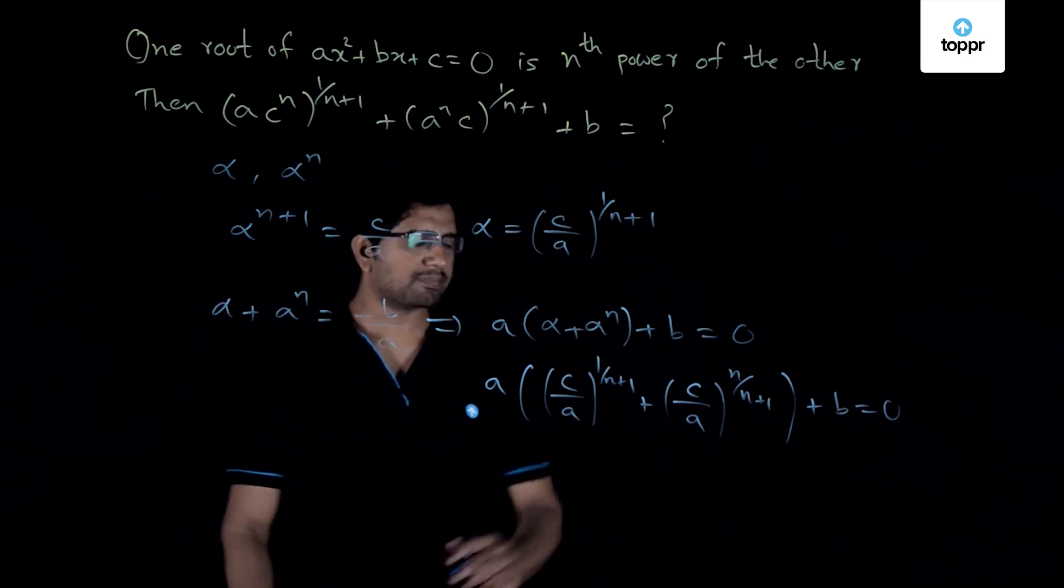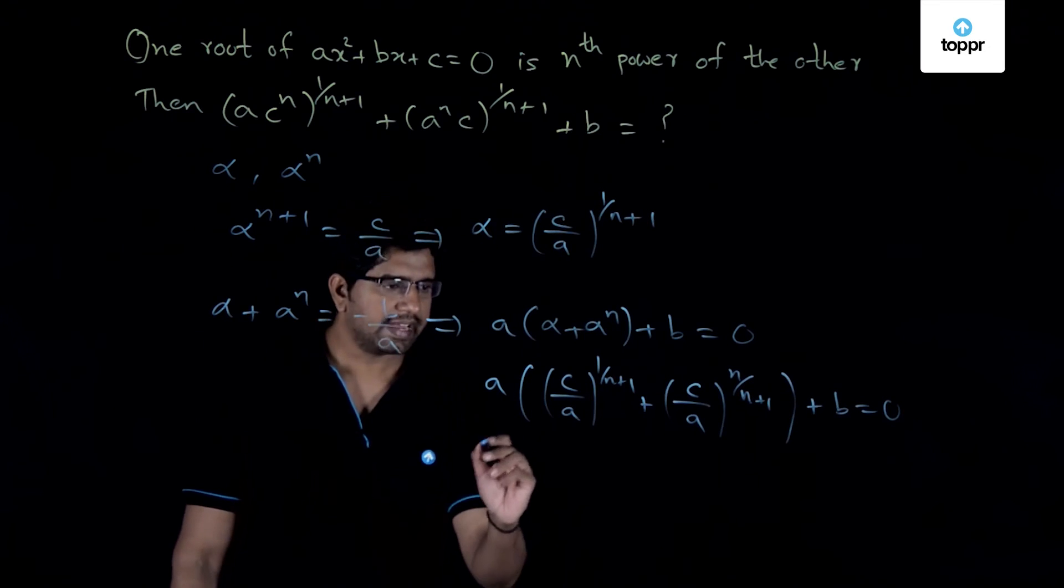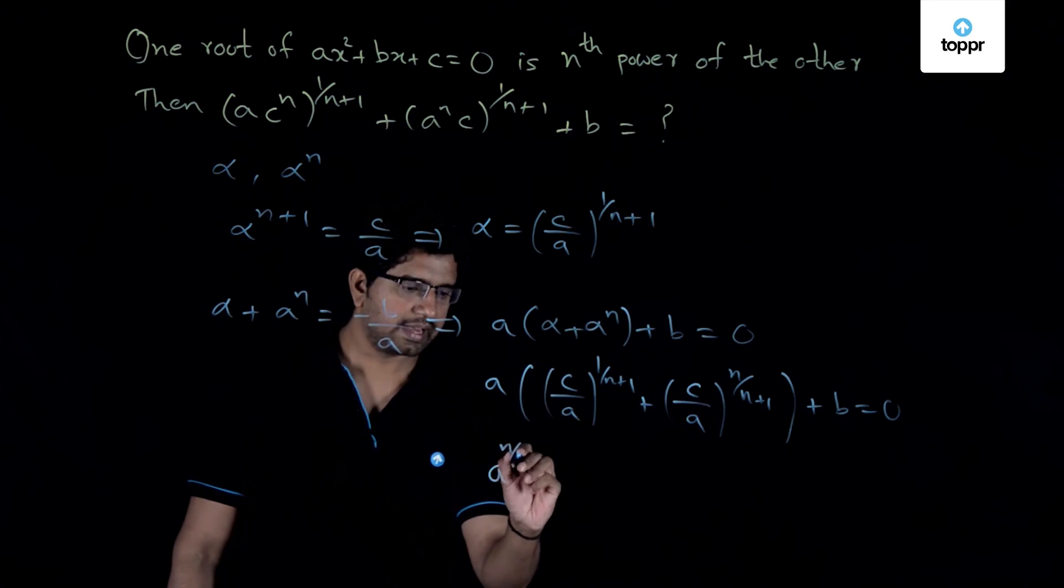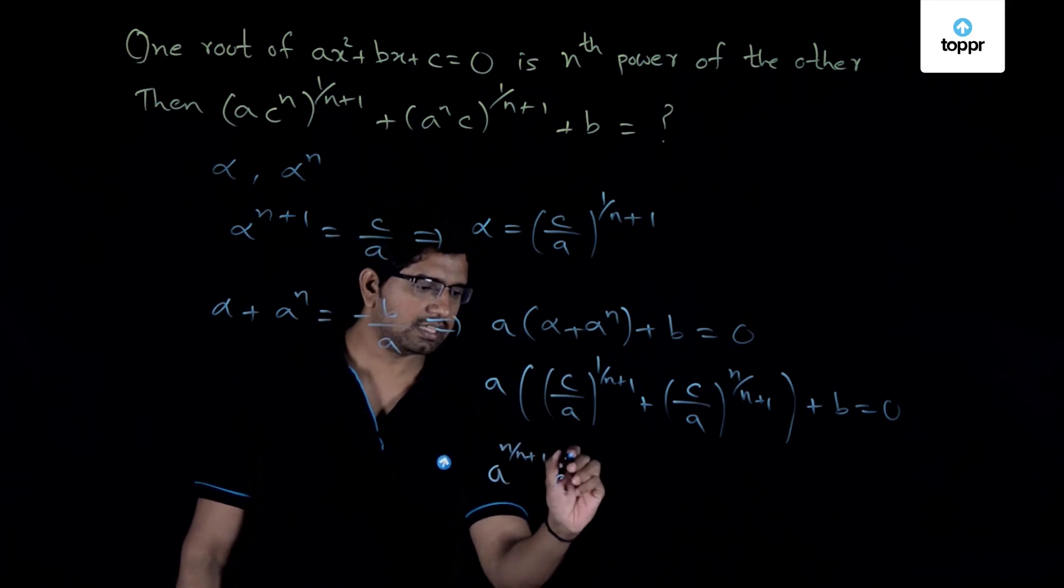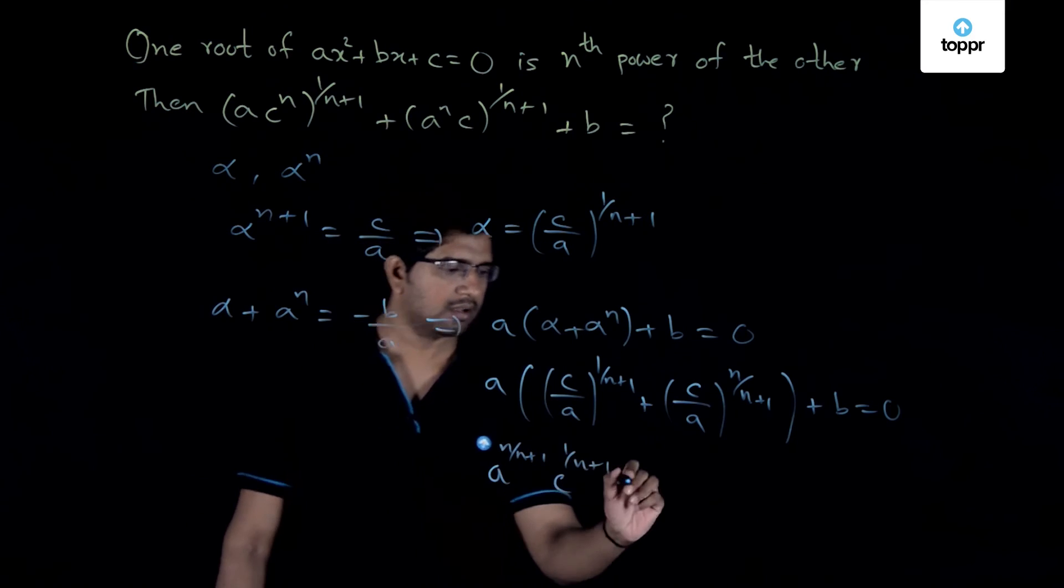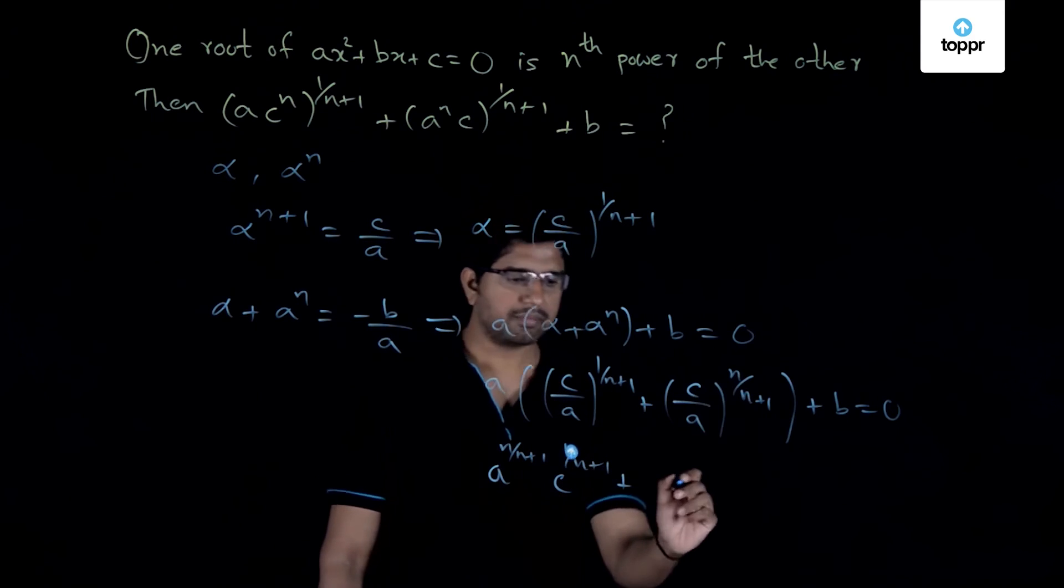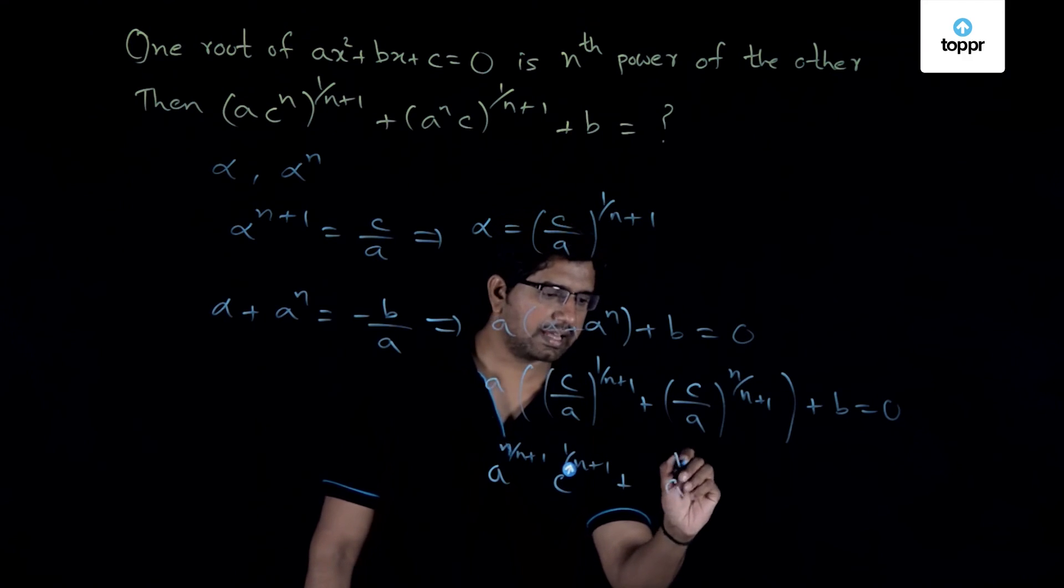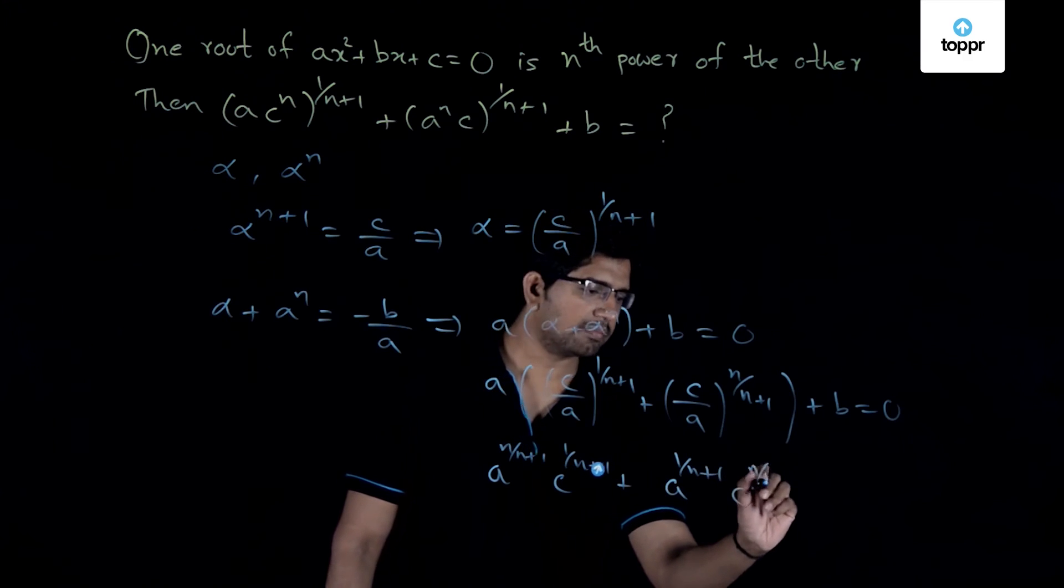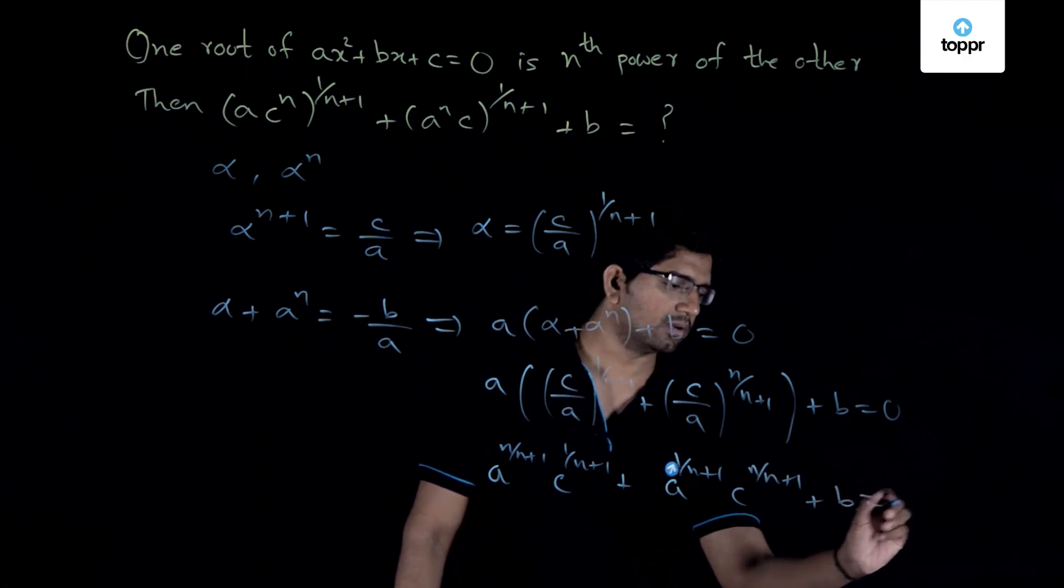Now if you expand this out you will get c times 1 by n plus 1 plus c times n by n plus 1 plus b equal to 0. Now is this the same expression that we were asked to find out?